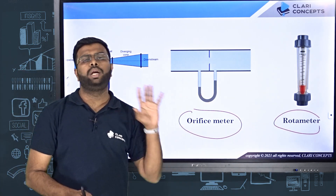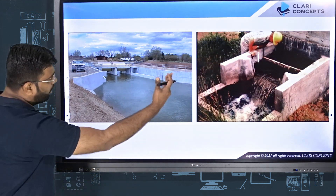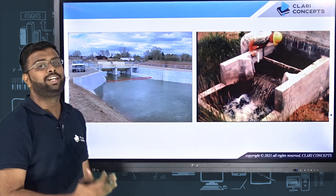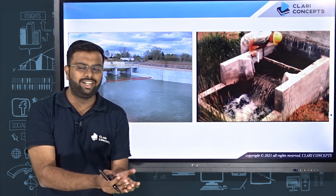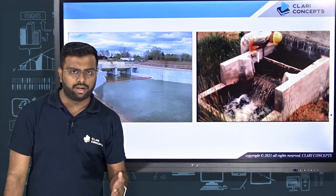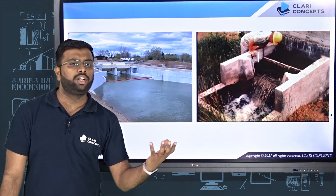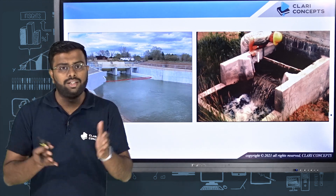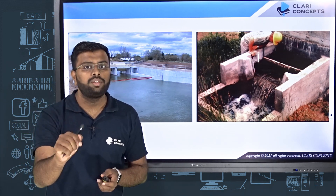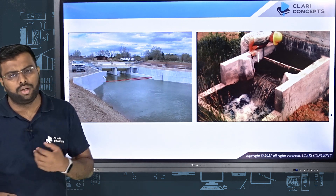Now consider large open water bodies like canals and rivers. You cannot place a small vessel at the outlet to measure flow there. In the Indian context, dams are built to create reservoirs, and water is distributed through canal networks for irrigation. As an engineer, you need to ensure the correct flow rate is passing through a canal at any given section. So how do you measure that?